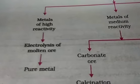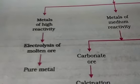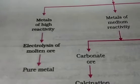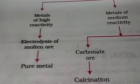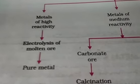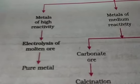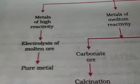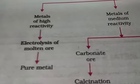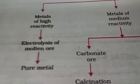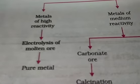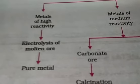The sodium goes and attaches to the cathode. The chlorine which is there attaches to the anode, the positive side. After the electrolysis of the molten ore, the sodium obtained is 99.9% pure. Only one step is included for this high reactivity metal - that is, electrolysis of molten ore.